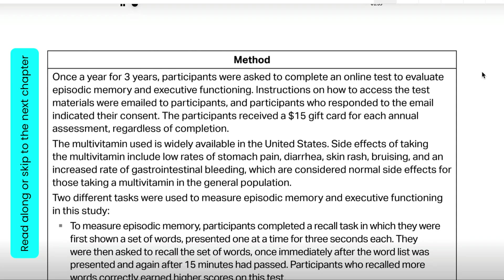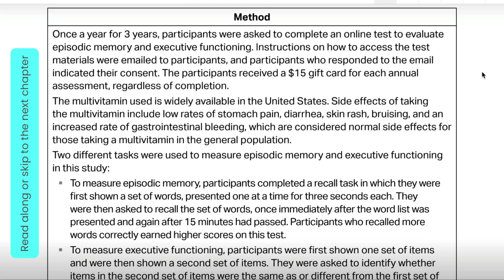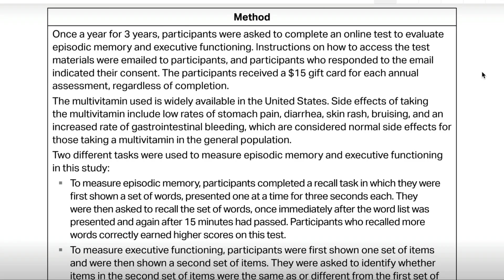Method. Once a year for three years, participants were asked to complete an online test to evaluate episodic memory and executive functioning. Instructions on how to access the test materials were emailed to participants, and participants who responded to the email indicated their consent. The participants received a $15 gift card for each annual assessment, regardless of completion. The multivitamin used is widely available in the United States. Side effects of taking the multivitamin include low rates of stomach pain, diarrhea, skin rash, bruising, and an increased rate of gastrointestinal bleeding, which are considered normal side effects for those taking a multivitamin in the general population.